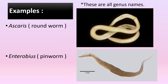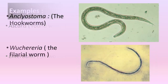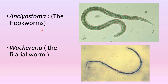Let's look at some examples of nematodes. First, we have Ascaris, the roundworm, as you can see here. Then we have Enterobius, or the pinworm. There is also Ancylostoma, or the hookworm, and Wuchereria, the filarial worm.